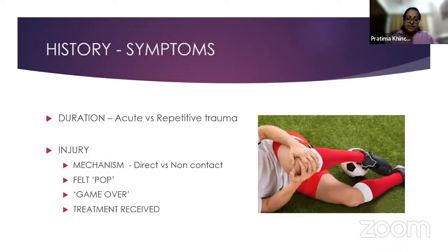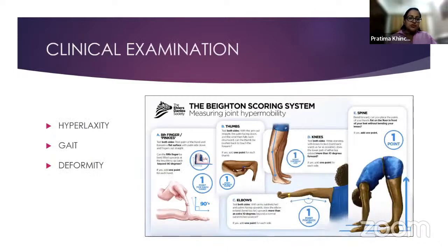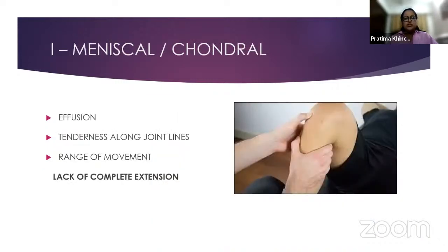If they've had an injury, it's good to ask the patient to replicate the mechanism — what exactly happened, were they able to continue playing, what treatment did they receive. The most important factor in the OPD is to determine why the patient is there and what their expectation is. Before specific clinical examination, it's good to check the Beighton score for hyperlaxity, check the gait if weight-bearing, and any deformity of the lower limb. For meniscal injuries, effusion usually comes a few hours after injury or even the following day, and tenderness along the joint line is quite sensitive for a meniscal injury.